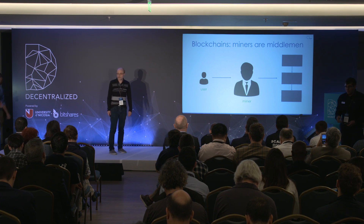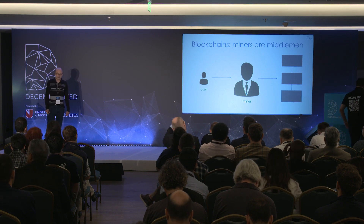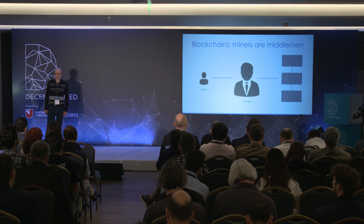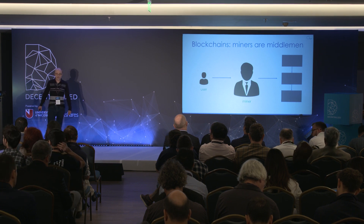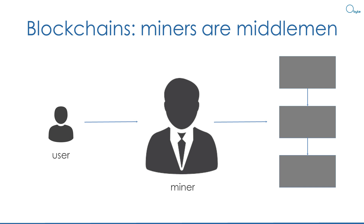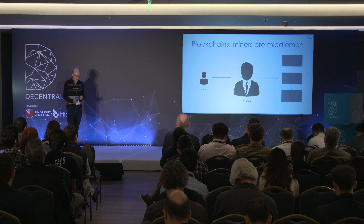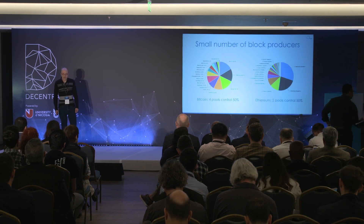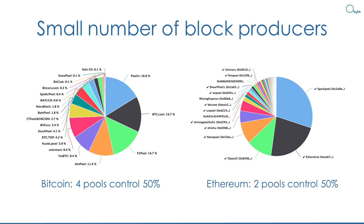In blockchains, you as a user do not have direct access to the ledger. When you want to add a transaction to the ledger, you have to go through the miners. It is the miners, the block producers, who decide if your transaction will be included into the next block. It is the miners who have exclusive access to blocks and have the power to decide if your transaction is accepted or not. Miners serve as middlemen — they stand between you and the ledger. And in practice, there is usually a small number of block producers, miners or mining pools, that collectively control more than half of the total mining power.